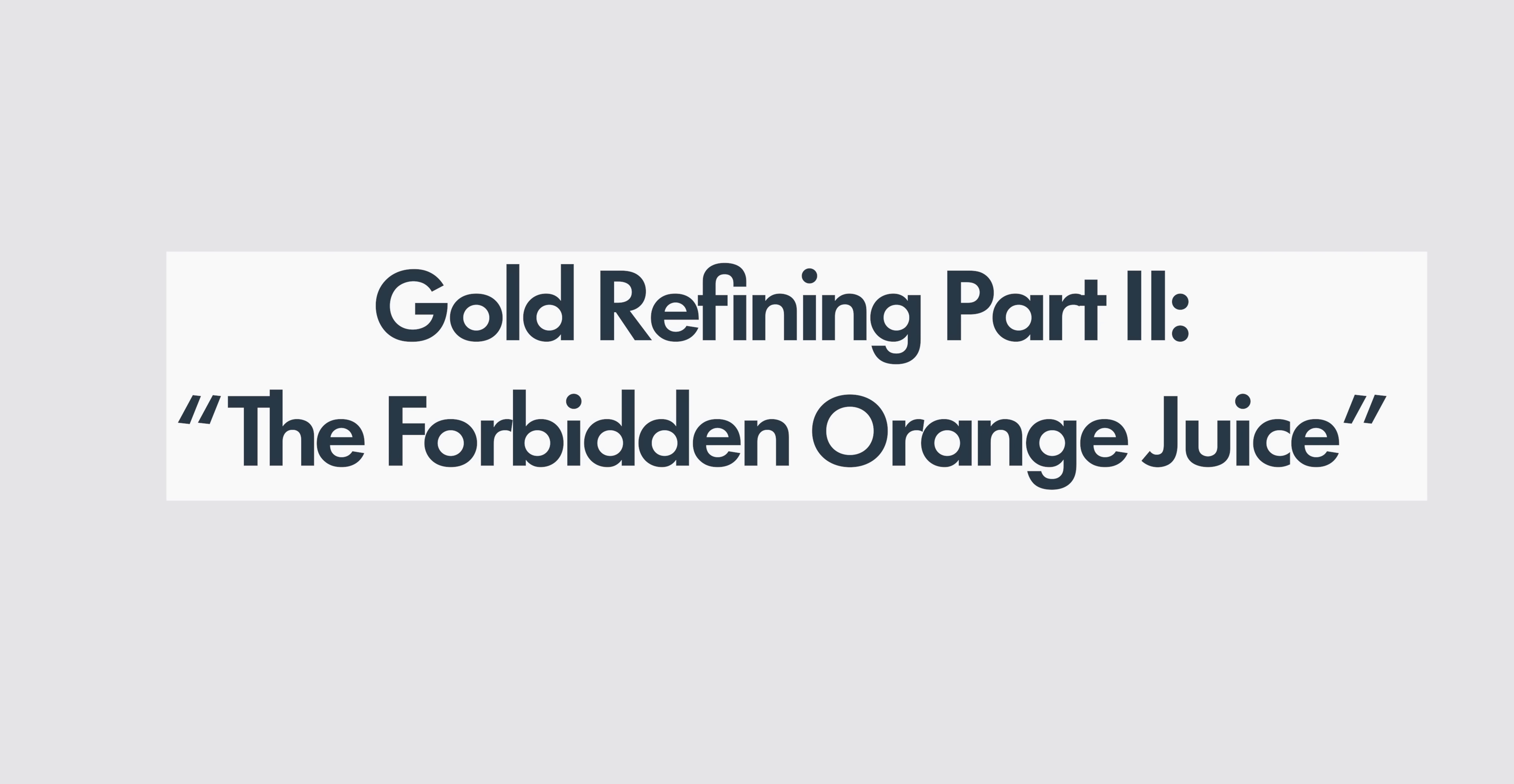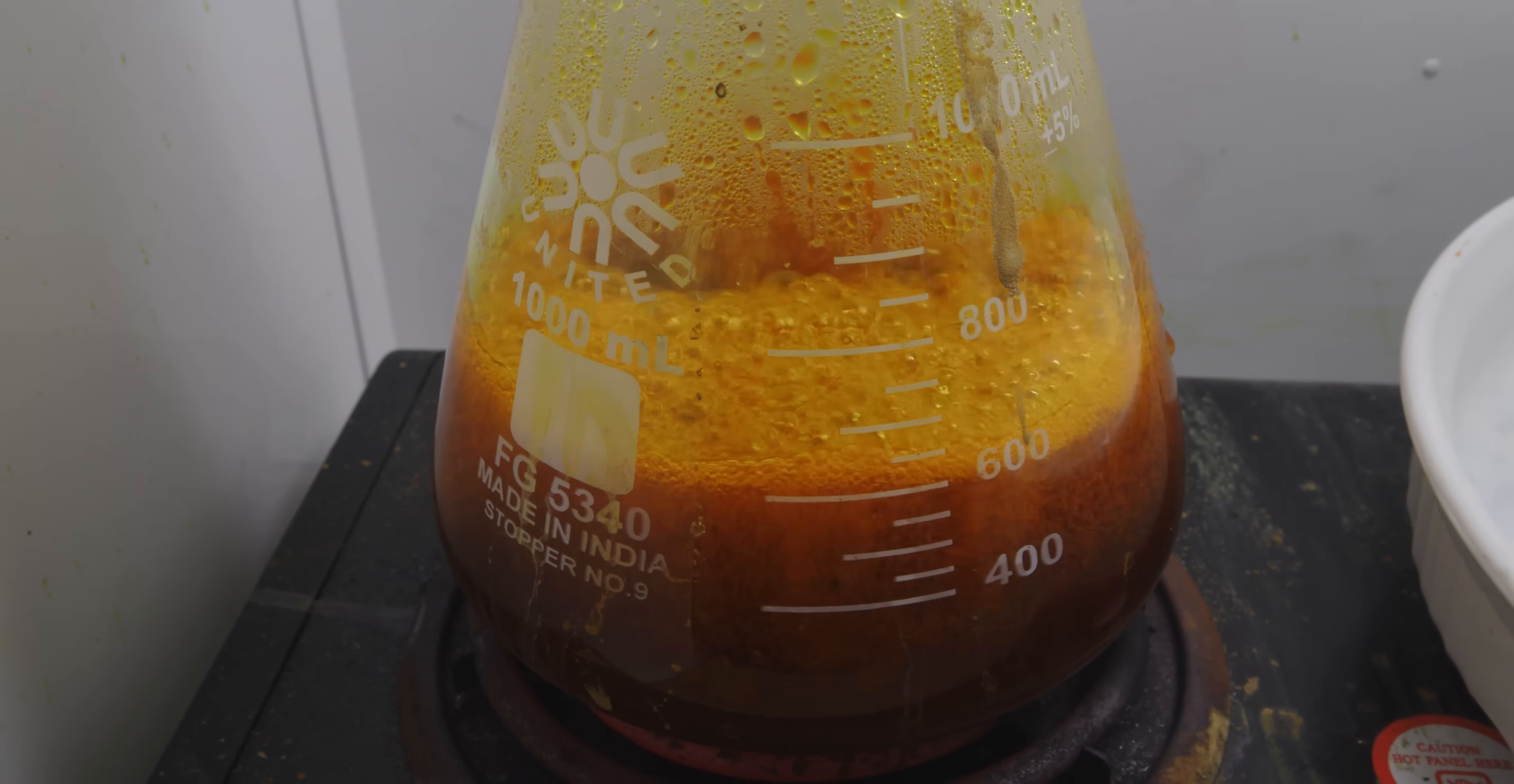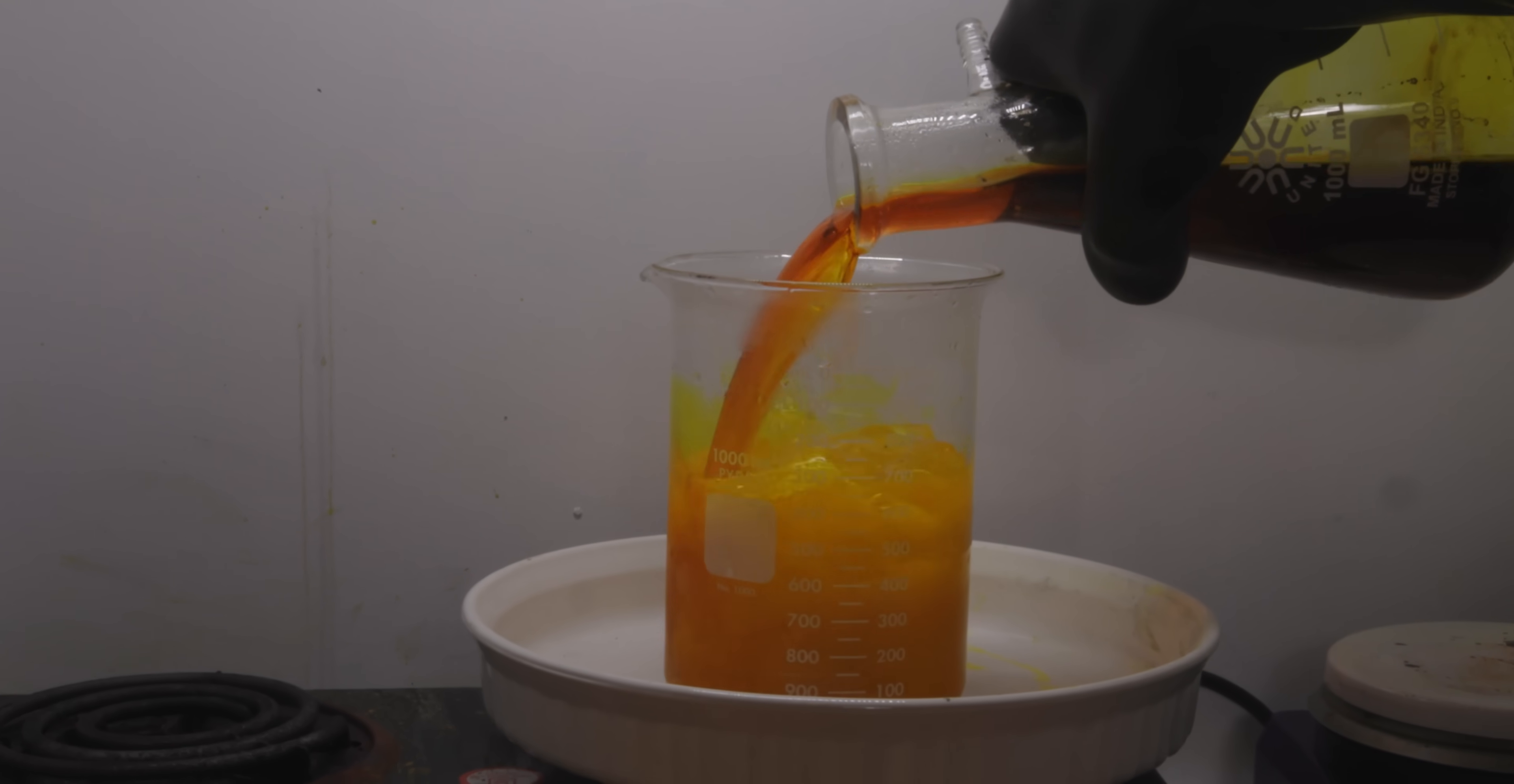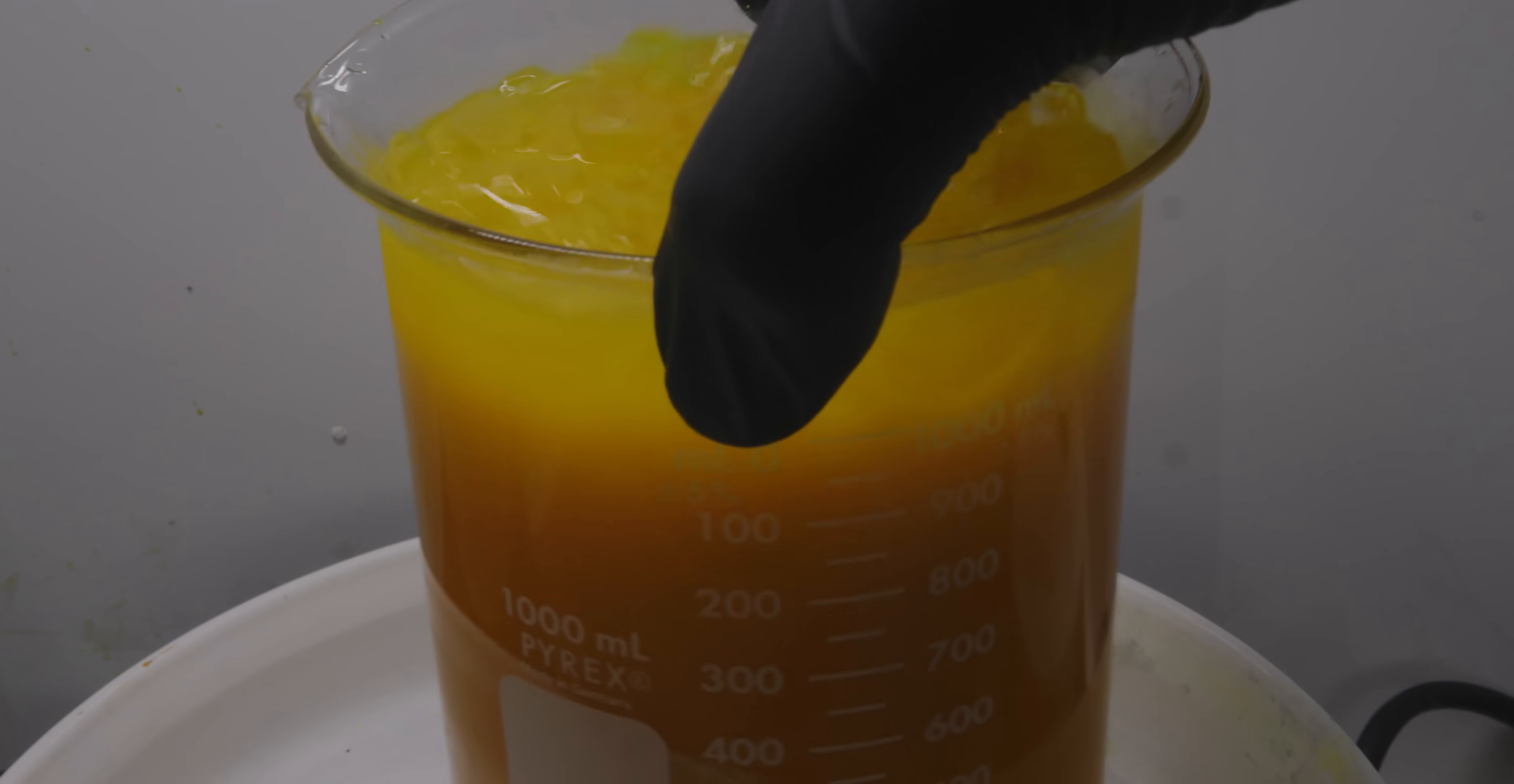Introducing gold refining part 2, the forbidden orange juice. I'm kicking things off with the ever-familiar Aquaregia. But the reaction, it looks different this time. It has beautiful deep and rich orange colors. And the gold mud, well, it put up no fight in dissolving quickly. Pouring it over ice, I give you forbidden orange juice. You can see there was some silver chloride left over, which validates my decision to repeat this refining process.